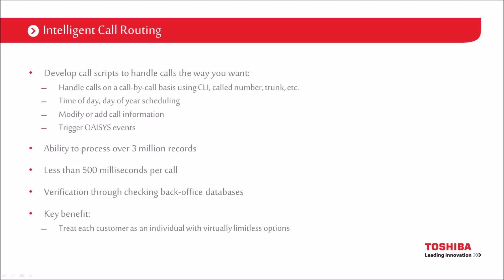With intelligent call routing, we're able to look at the CLI of the inbound call, look up that CLI in a database, and route calls based on that. For example, a CLI coming from Birmingham is a Midlands account, so we route that call to the Midlands sales team. Or we can use CallRouter to look at a database and identify that a customer is on credit hold — rather than putting the call through to the sales desk, we pass it to the accounts team to get the account cleared, then allow the call to go back to sales.